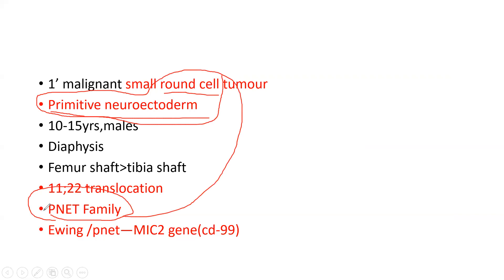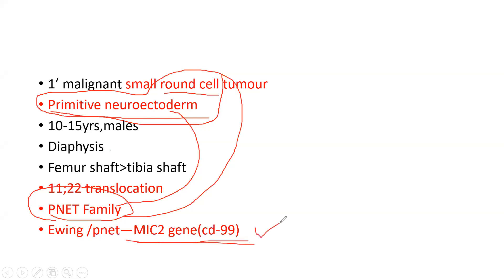The PNET family — primitive neuroectodermal tumors — are all round cell tumors. It affects young males, 10 to 15 years old. The diaphysis, specifically the femur shaft, is most commonly involved.